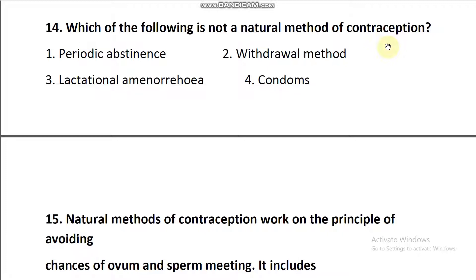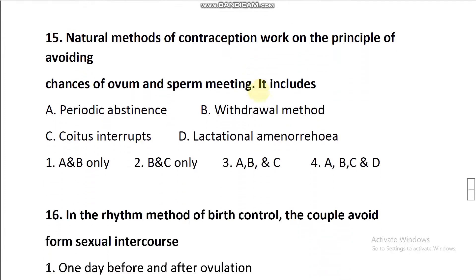The three natural contraceptive methods are: lactational amenorrhea, periodic abstinence, and coitus interruptus. Going through the options — periodic abstinence is a natural method (wrong), withdrawal or coitus interruptus is also a natural method (wrong), lactational amenorrhea is a natural method (wrong) — but condoms are artificial contraceptive methods. So the answer is option number four: condoms.